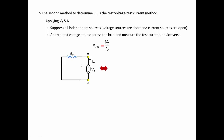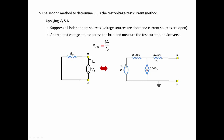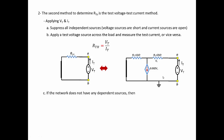Applying this to our network: suppress the independent voltage source by shorting it, while leaving any dependent sources unchanged in the circuit — you don't touch those. Then apply V-test, which is one volt, and solve for I-test. Once you have V-test and I-test, R-Thevenin equals V-test over I-test. This is where we apply V-test at the output terminals. This technique is particularly powerful when the circuit contains dependent sources.